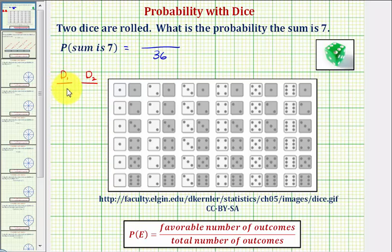Rolling the first die has six possible outcomes, and rolling the second die also has six possible outcomes. Notice six times six would also give us the total number of outcomes of 36.